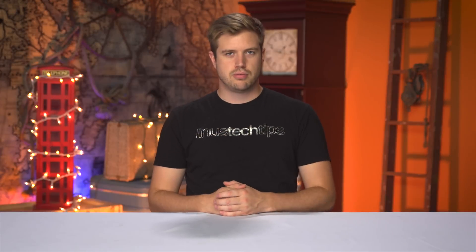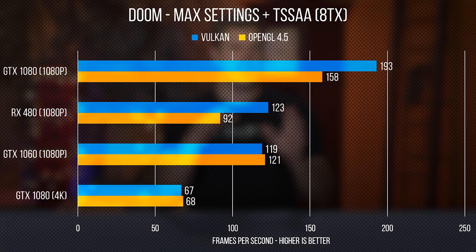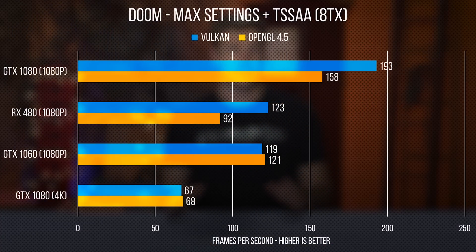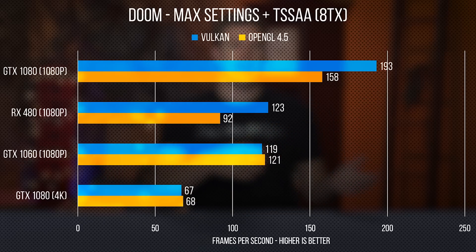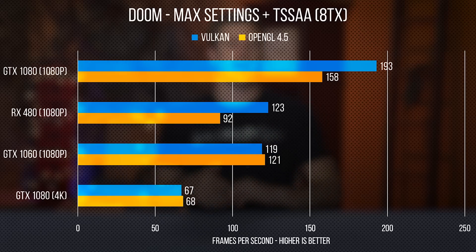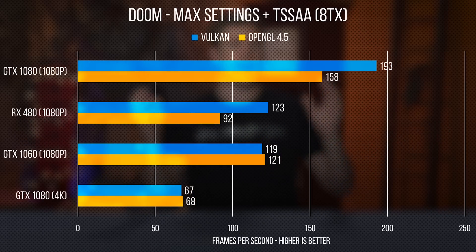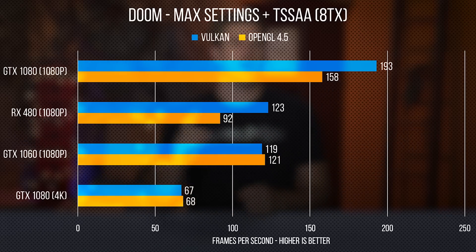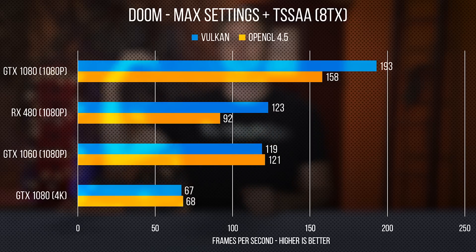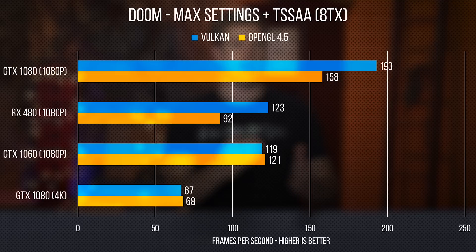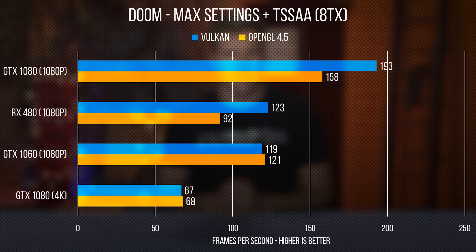Moving on to Vulkan — Doom numbers for the NVIDIA side are just a mess. For the GTX 1080, Vulkan was, similar to Tomb Raider, worse at 4K than OpenGL 4.5. Dropping down to 1080p however, it's a whole different story with massive improvements shown. The RX 480 does show the performance trend we would expect, improving considerably when running the Vulkan API and utilizing asynchronous compute shaders.